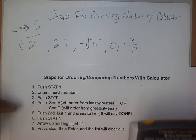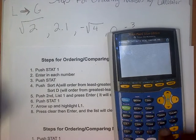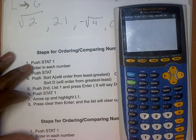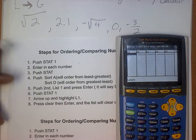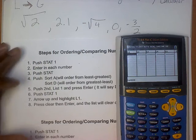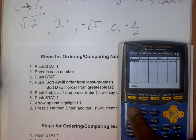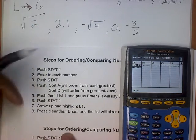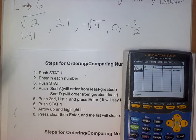Step one: push STAT, then 1. Go to STAT — it's right here — push it, and pressing 1 sends you to the Edit menu. Now you're in your list. Step two: enter in each number. Enter the square root of two, press enter, and look — it puts it right in decimal form. You can't just leave that in the calculator; you have to write right under that number what the decimal is. Just stop at the hundredths place: 1.41.